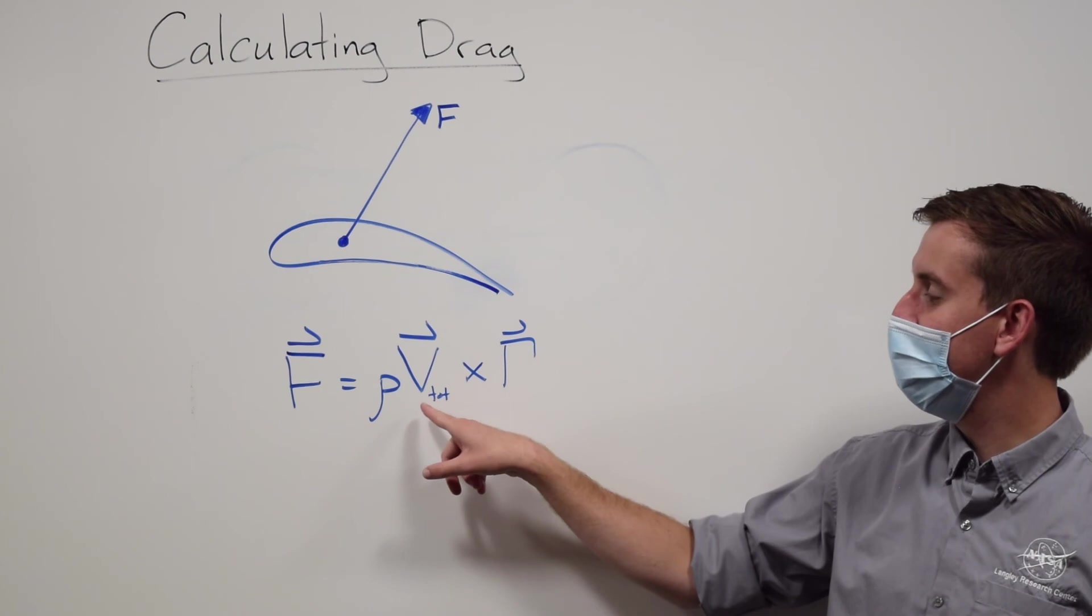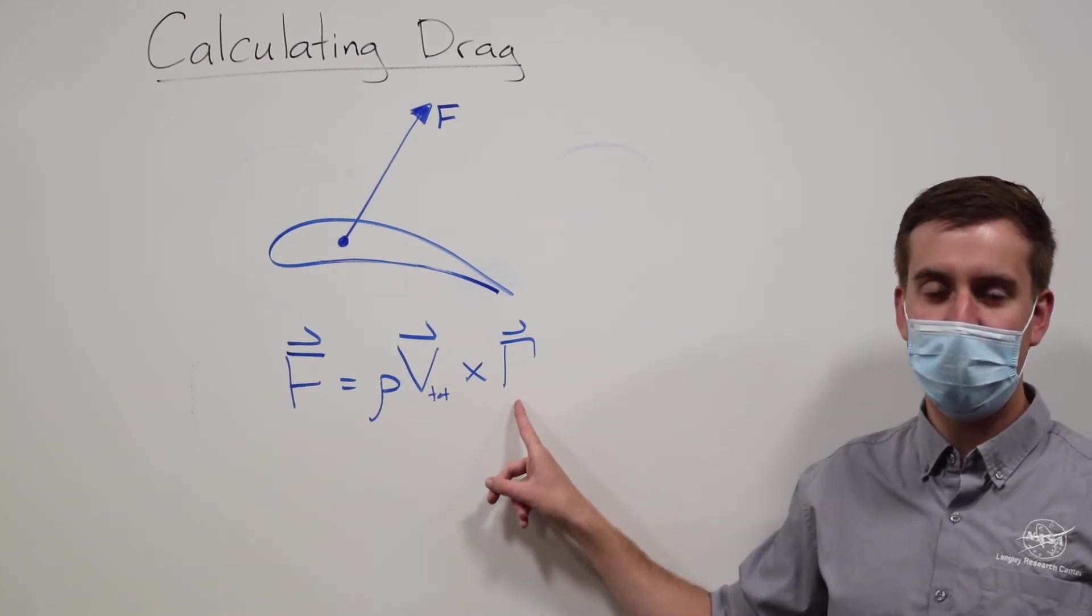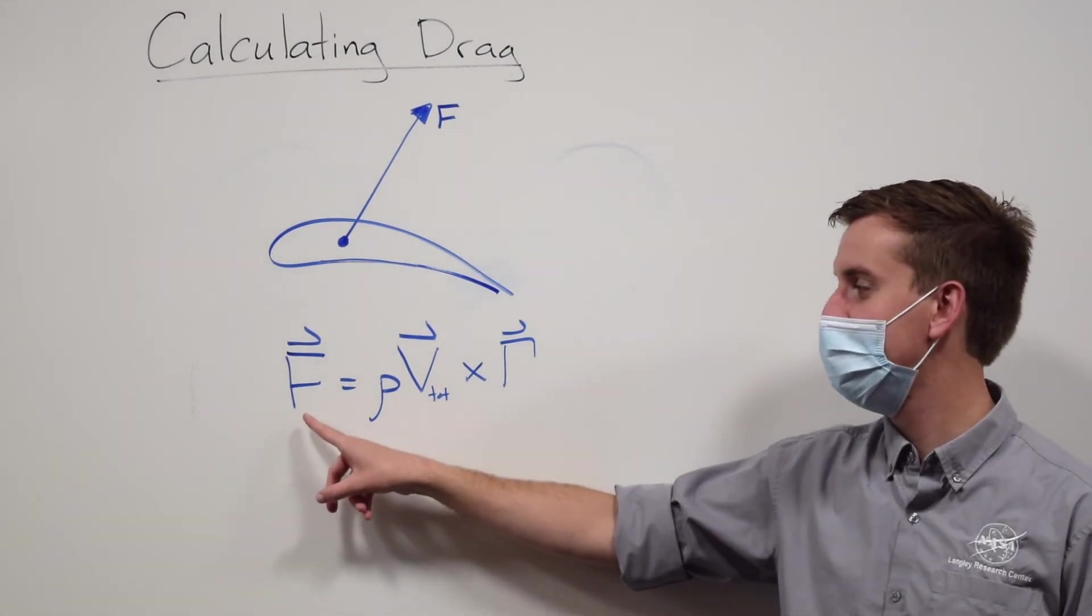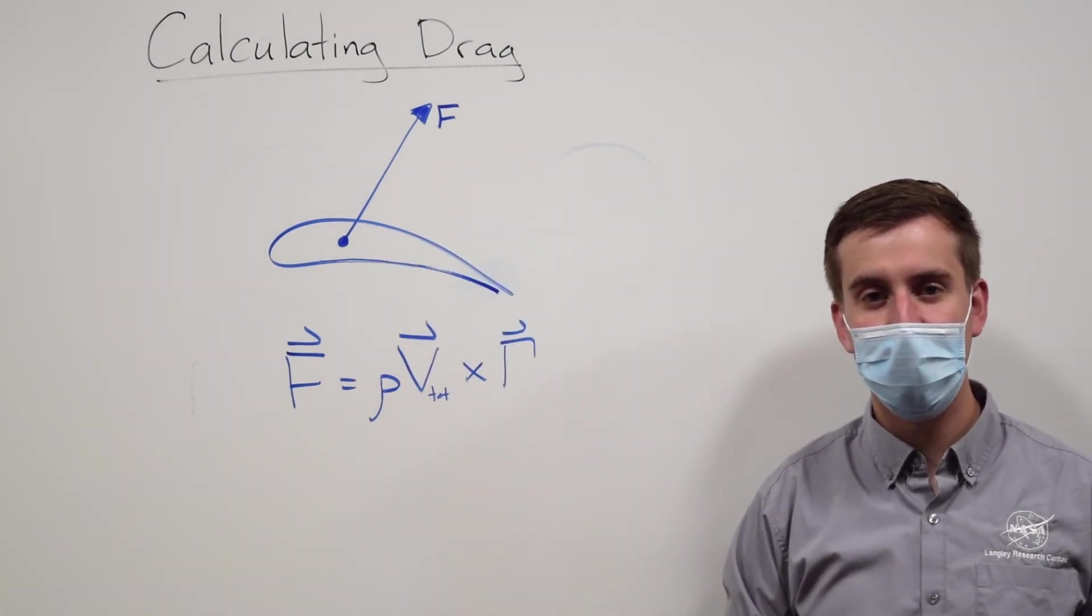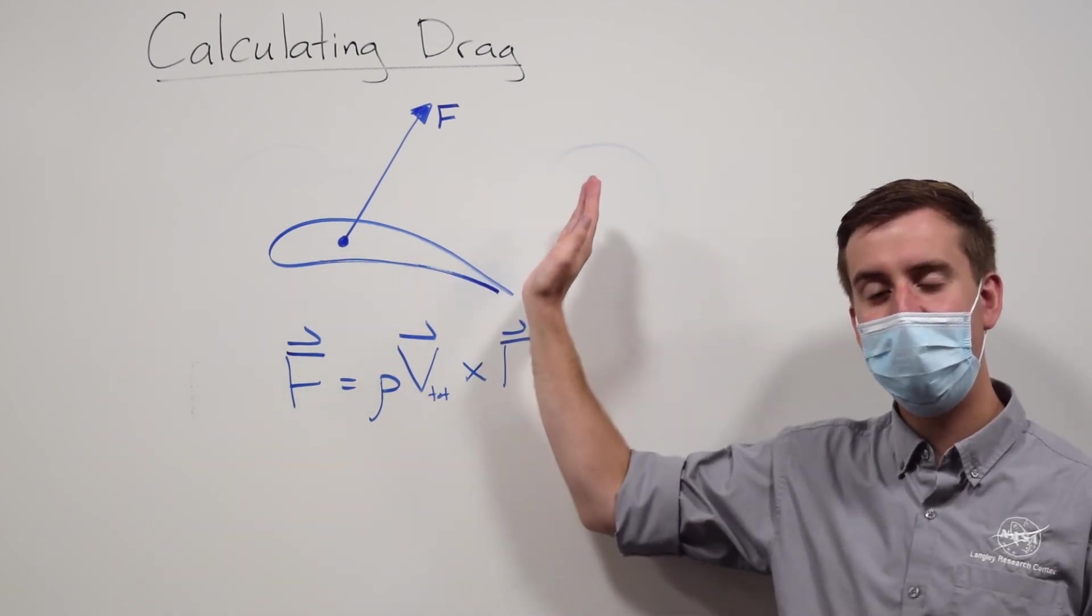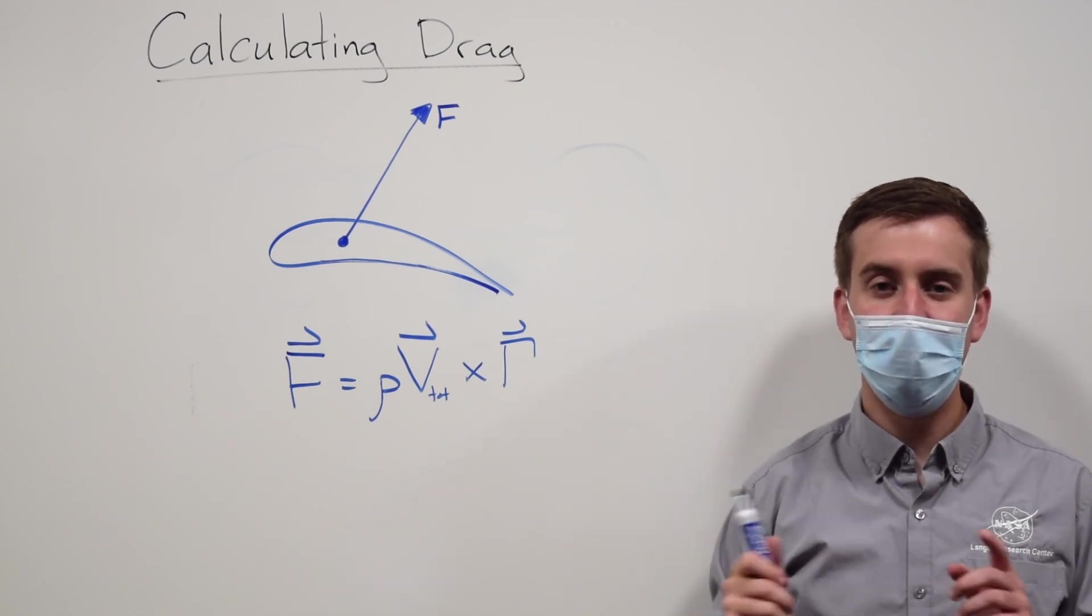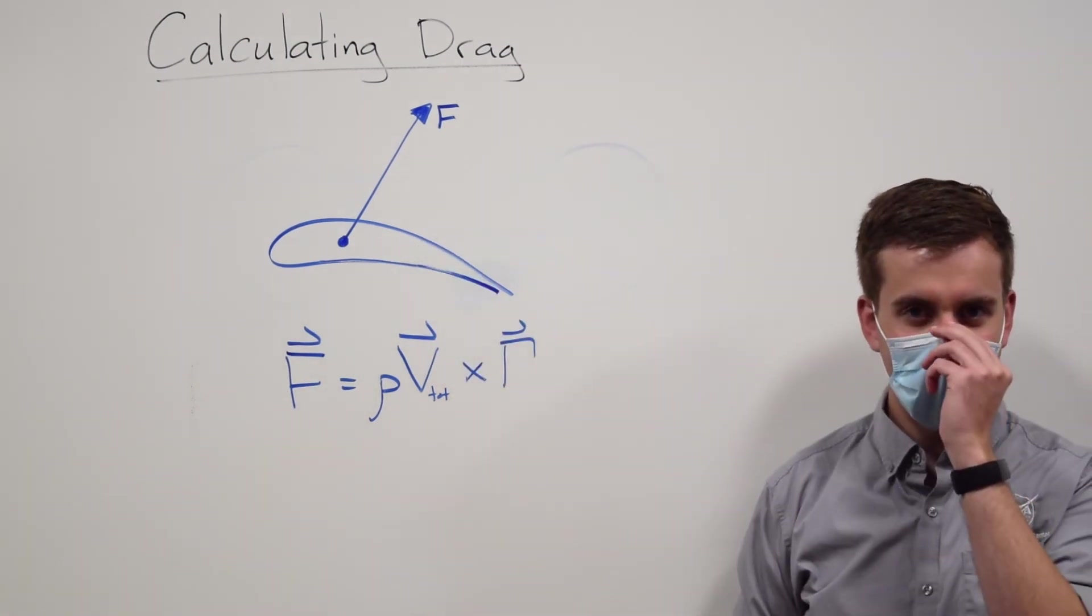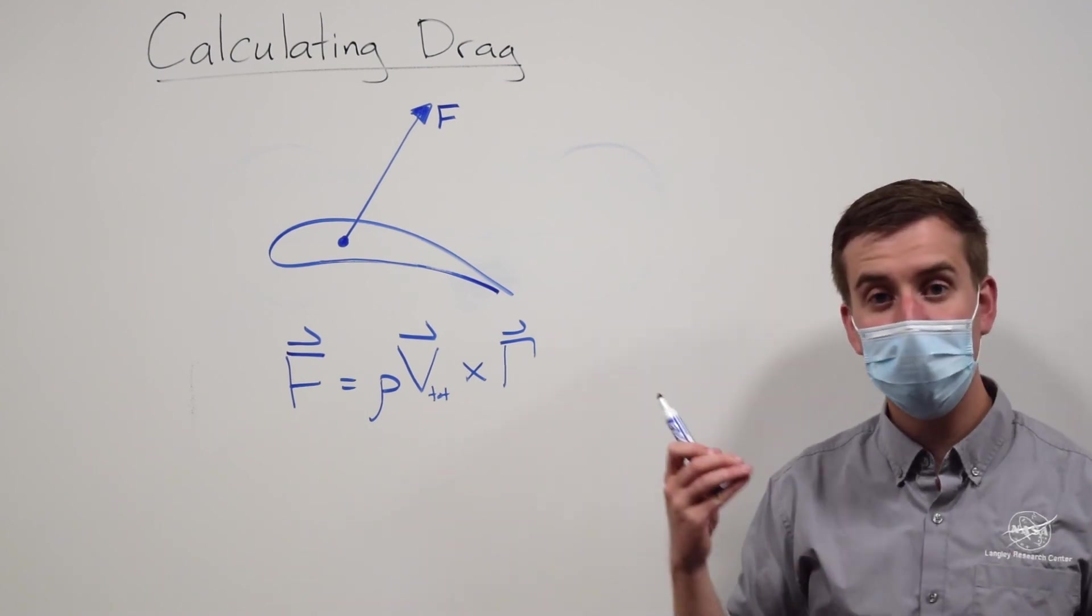And then we also have the swirliness of the air. If we treat this as a vector, and we treat this also as a vector, then our output of a cross product, as you'll learn in your math classes, is also a vector. And it is that total force vector. Then we can calculate how much of the force is pointed backwards, and how much of the force is pointed upwards. And when we do that, we can get our lift and our drag. But this force is always pointed diagonal. It can't just be pointed straight up. We'll always have a backward component to this total force.